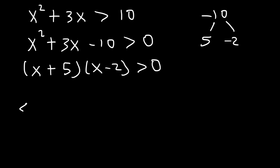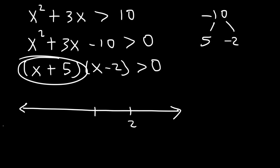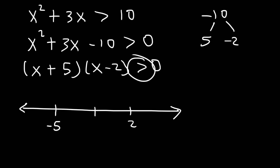Now what we need to do is make a number line. The points of interest are 2 — because if you plug in 2 you get 0 — and negative 5, since setting x plus 5 equal to 0 gives x equals negative 5. Notice this expression is greater than 0, not greater than or equal to 0, so negative 5 and 2 will not be included. I'm going to put an open circle at those points.